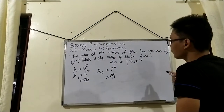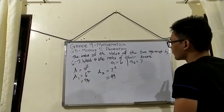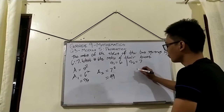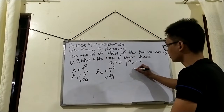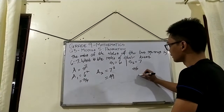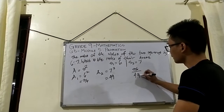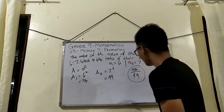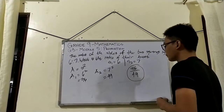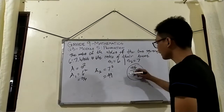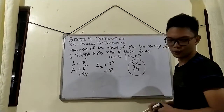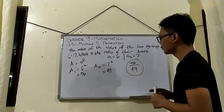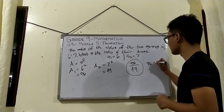Now, the question is: what is the ratio of their areas? To solve for the ratio, we write 36 divided by 49. Since 36 over 49 does not have a common factor, this is already in its lowest term. So the answer is 36 over 49, or 36 is to 49.